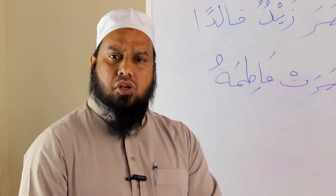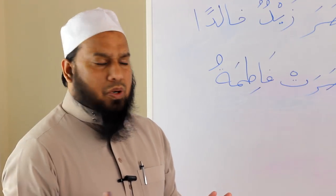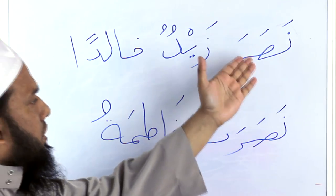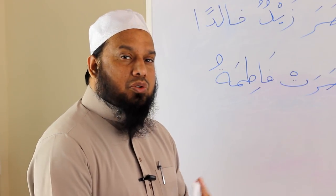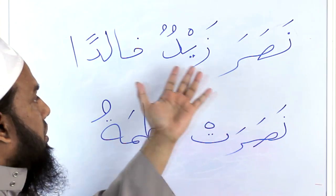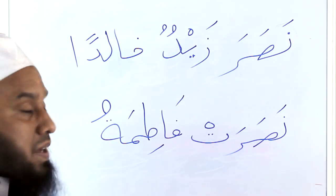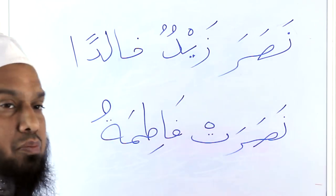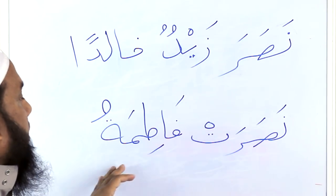You will learn the verb conjugations: Nasara, Nasaru, Nasarat, Nasarata, Nasarna, Nasarta, Nasartuma, Nasartum, Nasarti, Nasartuma, Nasartuna, Nasartu, Nasarna. Don't worry about all of these now, insha'Allah. Whenever you use a verb, you need to say who has done the action — who is the doer of that verb. Nasara Zaidun, Nasarat Fatimatu. The fa'il has a dhamma, just like Mubtada — dhamma tells you that the doer of the action is this person.